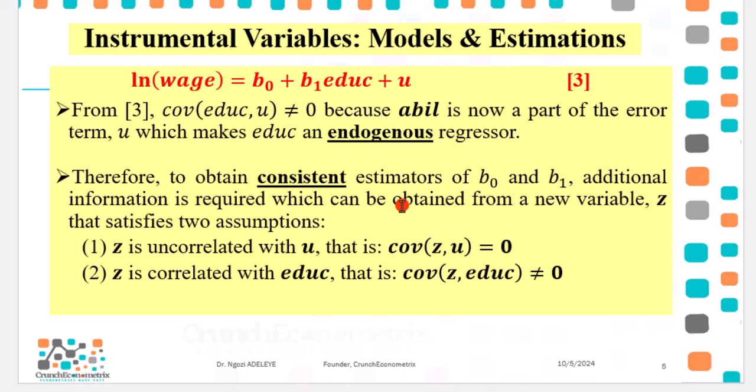Therefore, for us to have consistent estimators of beta0 and beta1, additional information is needed. And this can only be obtained from a new variable Z, which is an instrument. And the instrument must have two good properties, which I covered in the introductory parts of this video. Z must not be correlated with the error term, that is the covariance between them must be zero. And secondly, Z must be correlated with education, such that the covariance between the instrument and educ is not equal to zero.